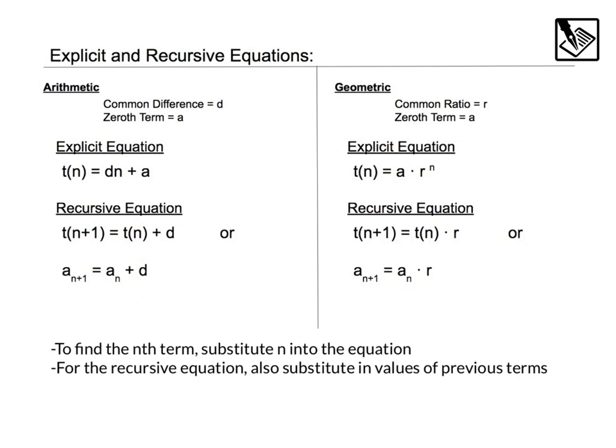I know this is a lot, but this is going to summarize everything we need to know about explicit and recursive equations, whether they're arithmetic or geometric. An explicit equation is one we can substitute n in directly to find the term, and a recursive equation relies on previous terms to find out what the next terms are. For arithmetic sequences, we have a common difference d, and the zeroth or starting term is a.